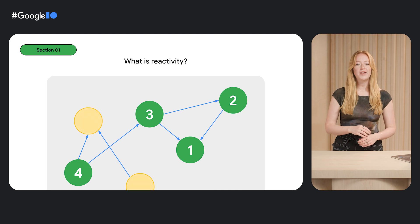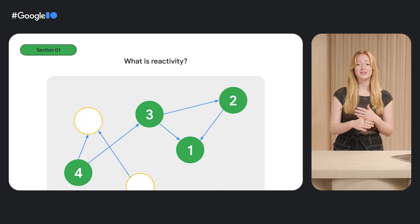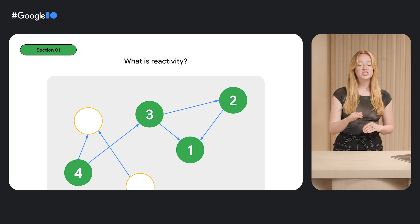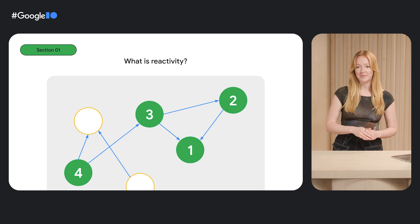The change propagation only notifies dependent values — values in the graph that don't depend on the changed value are not impacted. These precision updates are important for performance. We'll dig into this a little bit more later.